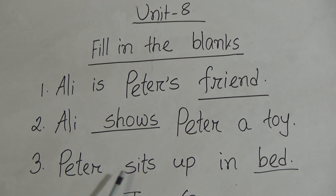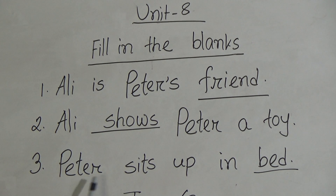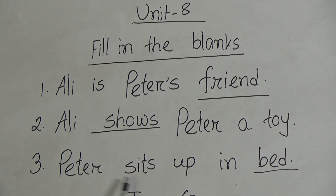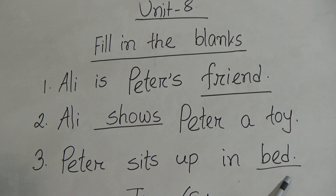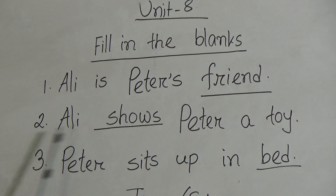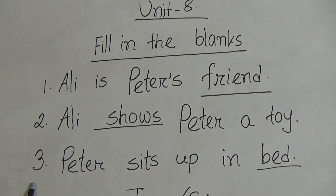Number 3: Peter sits up in dash. And the correct word is 'bed.' Peter sits up in bed. B-E-D, bed. So, fill in the blanks: number 1 is Ali is Peter's friend, number 2 is Ali shows Peter Atoy, and number 3 is Peter sits up in bed.